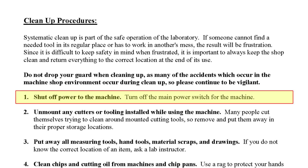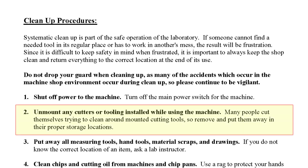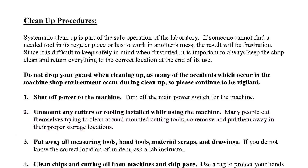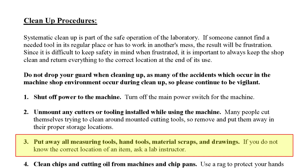Cleanup procedure number one: shut off power to the machine and wait for all motion to cease. Next, unmount any cutters or tooling installed while using the machine. These tools are extremely sharp so they can cut metals — therefore they have no problem cutting our hands — so when possible we want to remove them prior to cleaning the machine. This rule applies to tools such as end mills, drill bits, and lathe cutting tools. The third step is to put away all measuring tools, hand tools, material scraps, and drawings. If an item does not belong with the machine, it should not be left with it. If you are not sure of the correct location to which an item should be returned, simply give it to a lab instructor and let them put it away for you.